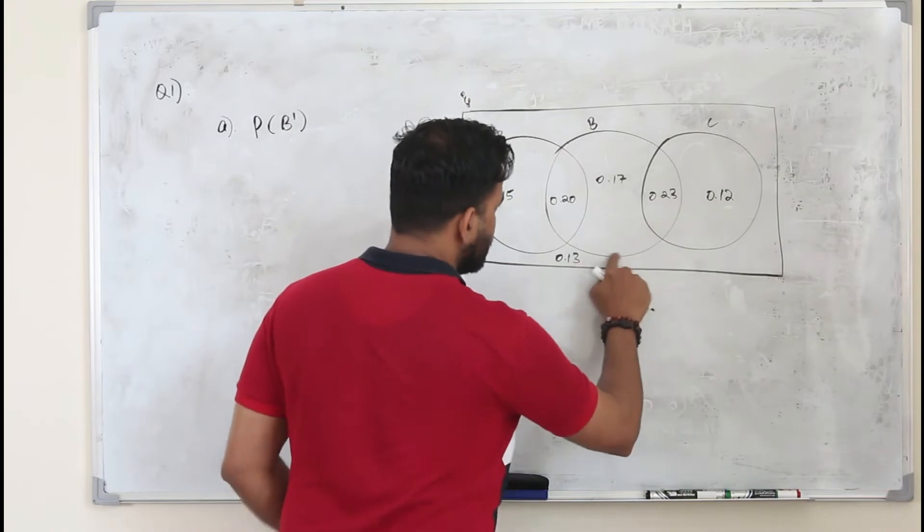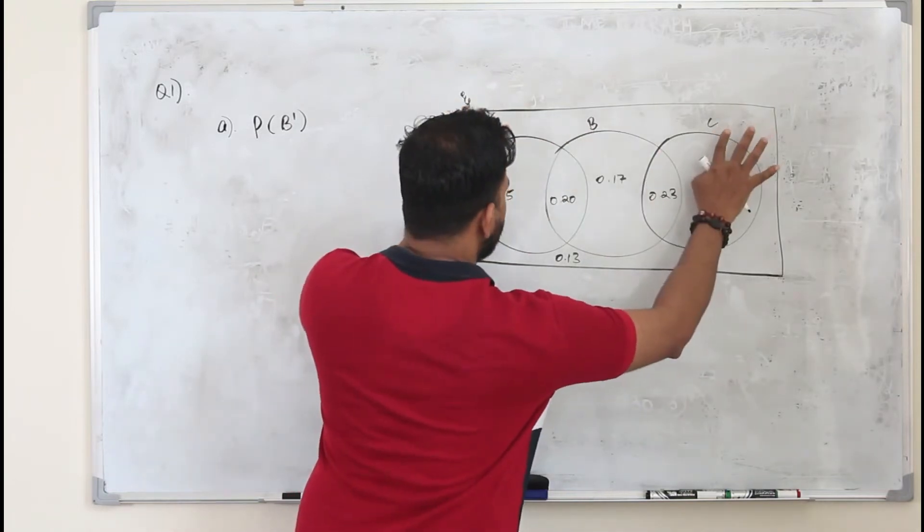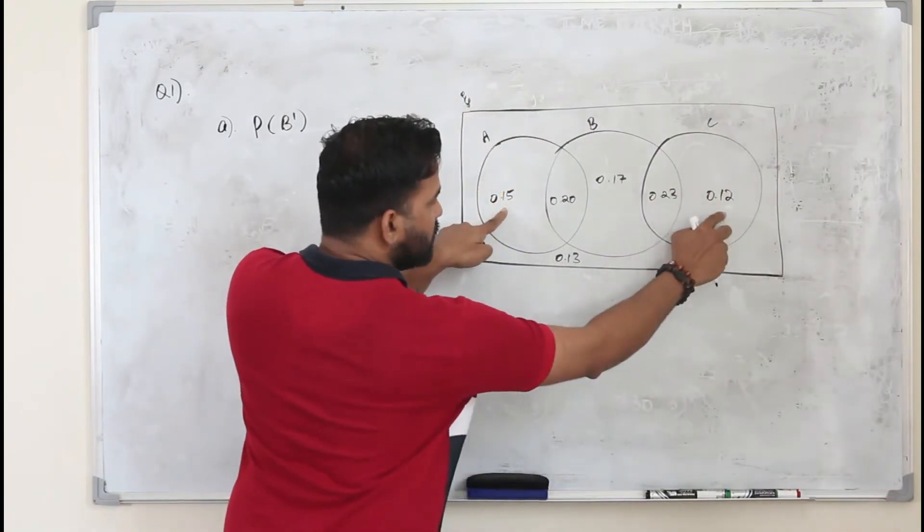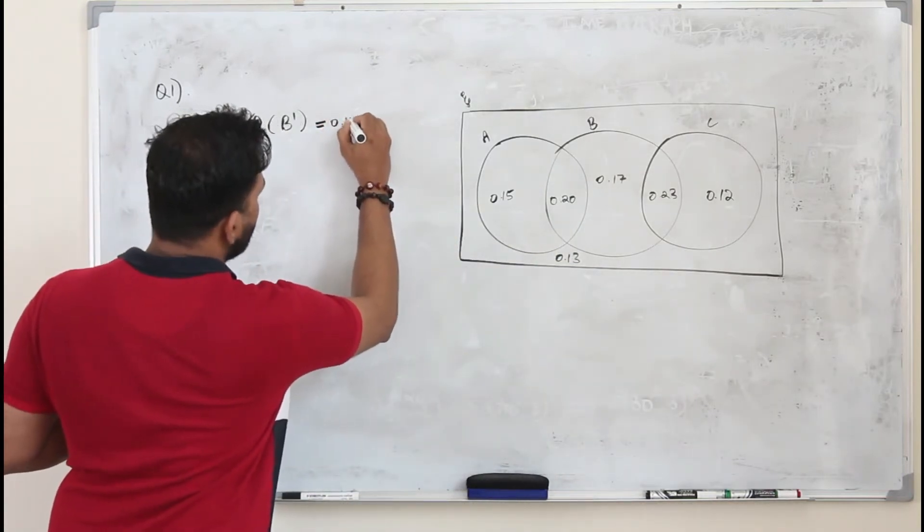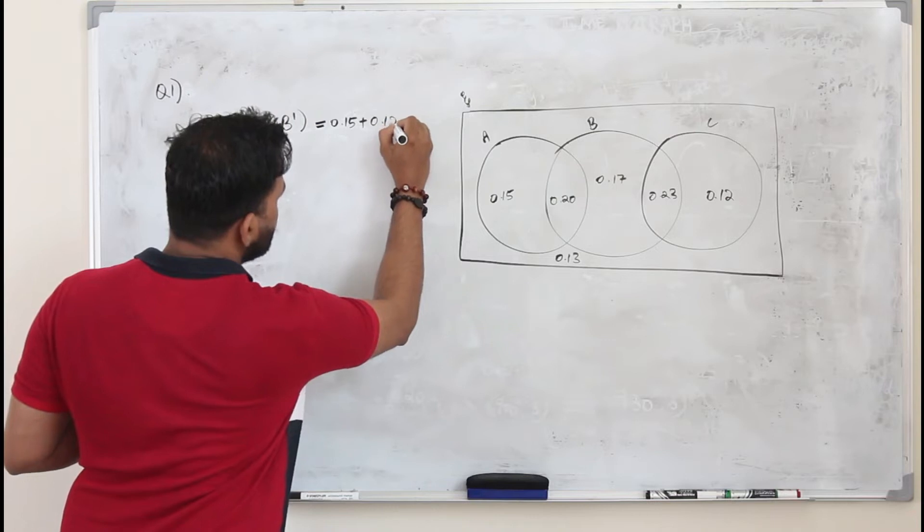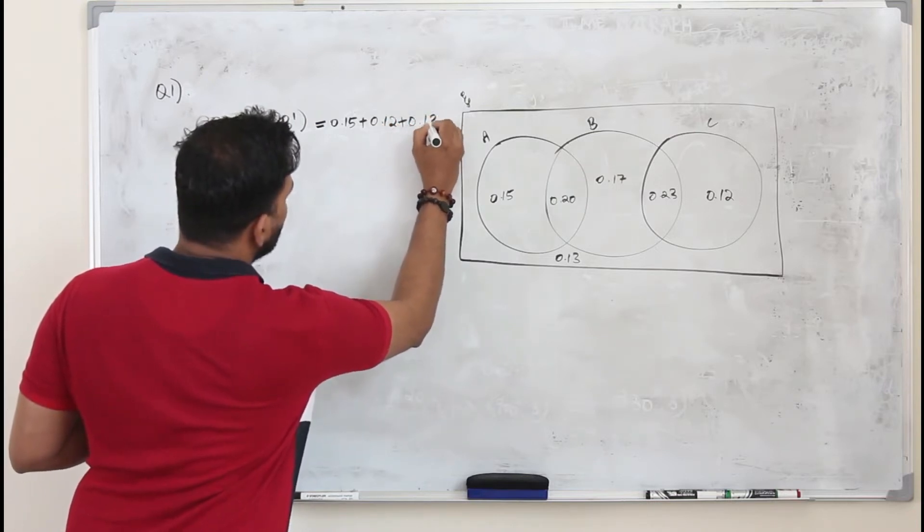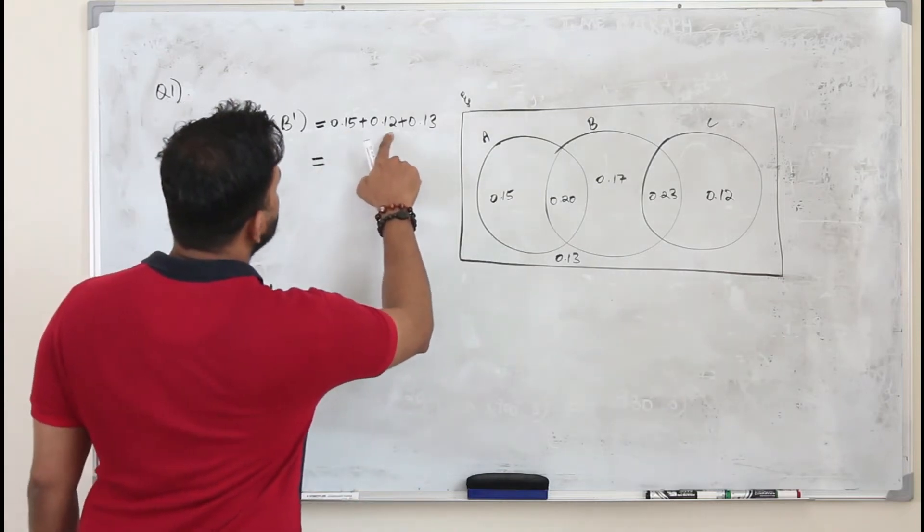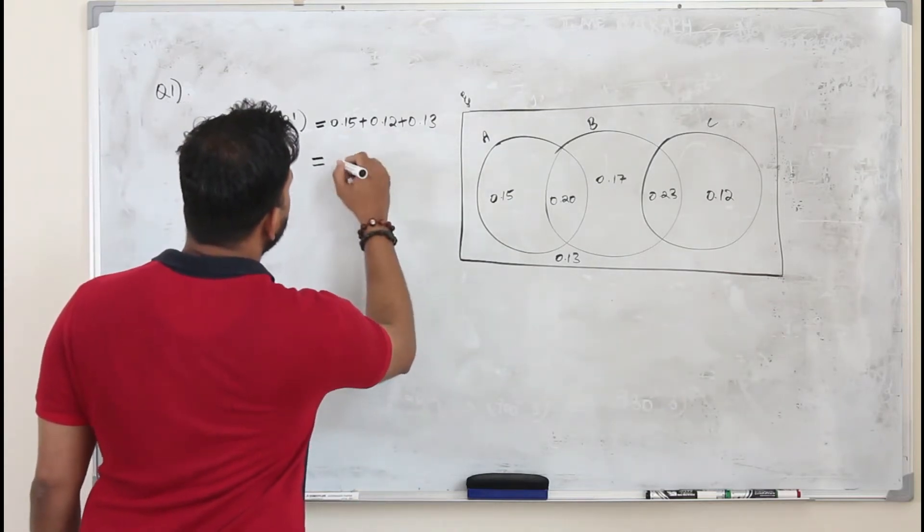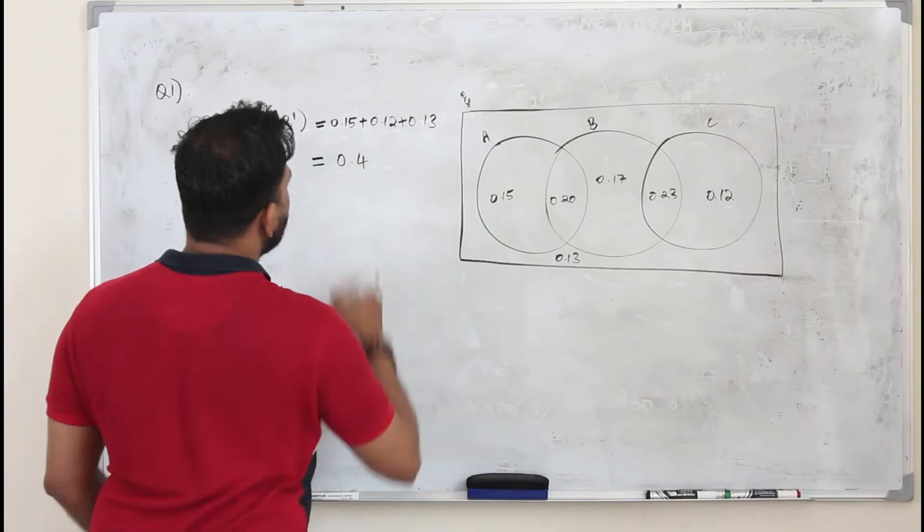B is this. So you have to take everything outside B. So this, this and this. It's 0.15 plus 0.12 plus 0.13. That's P of B dash. It's 0.4 is the answer.